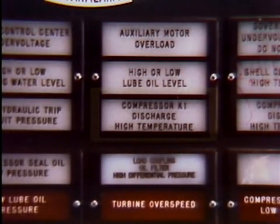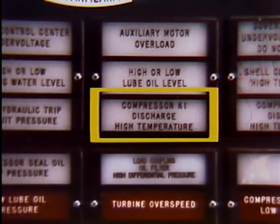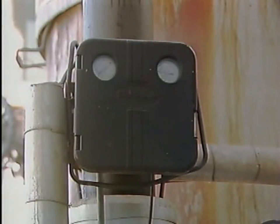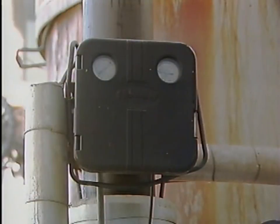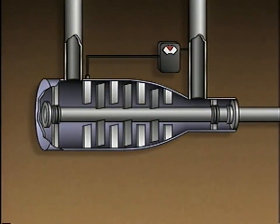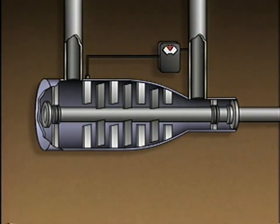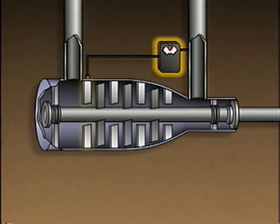For instance, this alarm is for high gas temperature. Compressor instrumentation and control devices also maintain the gas discharge pressure. This simplified illustration shows an axial compressor with one type of control system that maintains a constant discharge pressure. The main components of this control system are a pressure controller and inlet guide vanes.